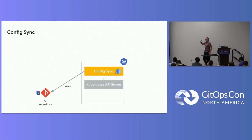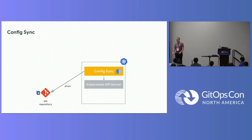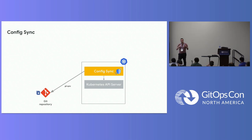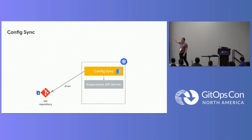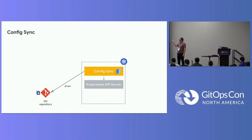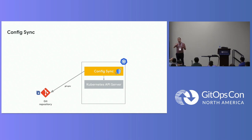Config Sync is one of the GitOps tools — it's an open source project from Google, announced at the last KubeCon in Europe. The goal is to have a GitOps controller within one cluster or a fleet of clusters where you can configure different reconciliation from different repositories, subfolders, branches, etc. It's a Git sync and Git pull mechanism from a Git repository.